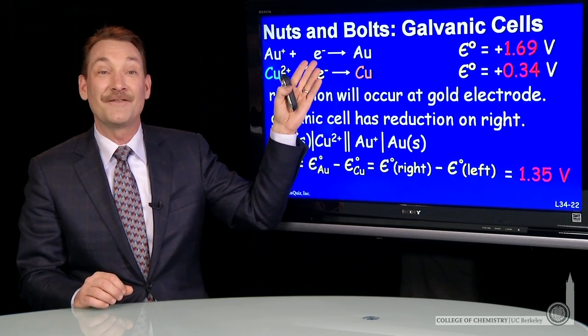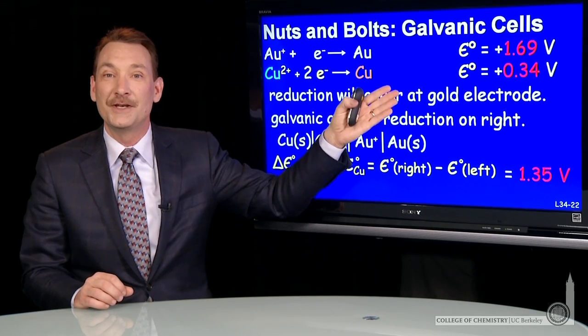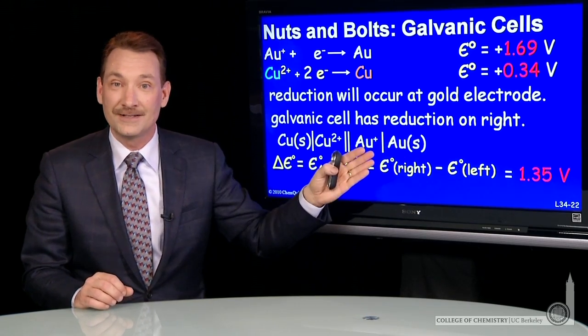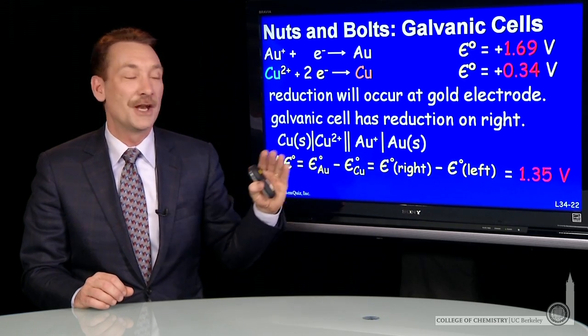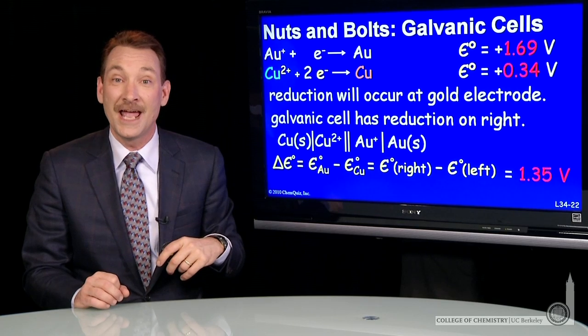So in a galvanic cell between gold and copper, the gold will be the reduction. And I always write the reduction on the right of my half cell diagrams. It occurs at the cathode. And the oxidation on the left, which occurs at the anode.